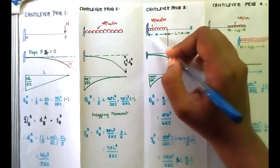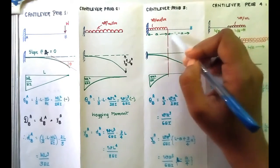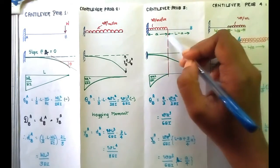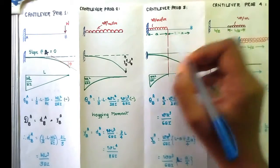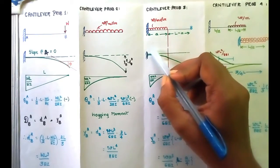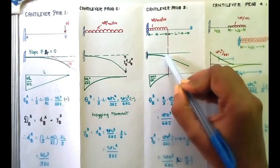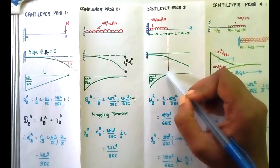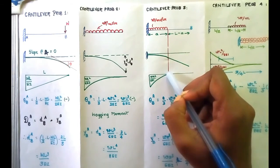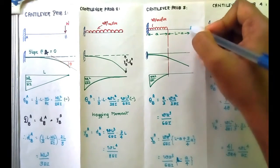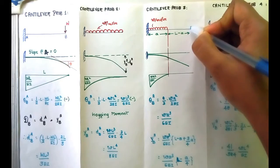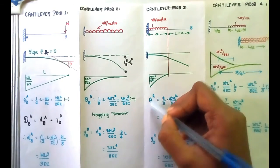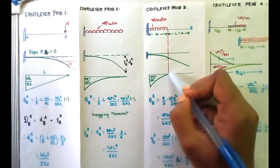The next problem has a UDL applied from A over a distance 'a', with the remaining portion L minus a unloaded. The bending moment diagram starts from the loaded portion. We want the deflection and slope at B. Theta between A and B equals the area under this diagram, which includes the spandrel portion area.